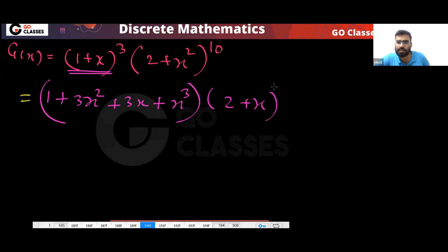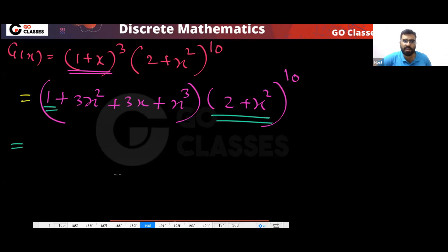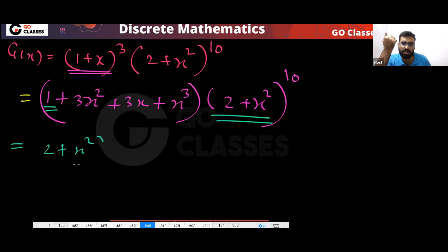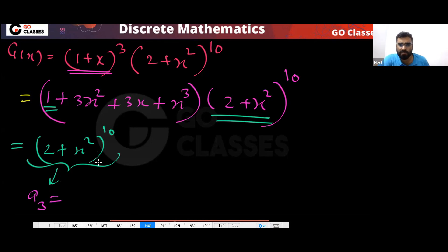If you expand (1+x)³ you get 1 + 3x² + 3x + x³, multiplied by (2+x²)¹⁰. Now when the constant term '1' multiplies (2+x²)¹⁰, can you ever get x³? In (2+x²)¹⁰ you only have even powers of x, so you can never get x³. Therefore a₃ will be 0 from this term.